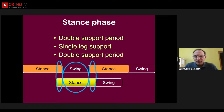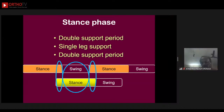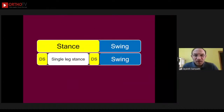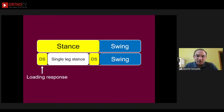Before the right leg can go into swing, the left leg has to come back and reach the ground, giving one more double support period called the terminal double support period. So you have an initial double support, a single leg support, and a terminal double support period. Looking at the gait cycle, we divide stance into subgroups: the initial double support period is called loading response, and the terminal double support period is called pre-swing — because it immediately precedes swing.